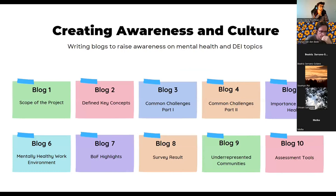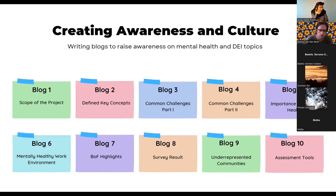One of the ways we try to create awareness is through writing blogs. So far, we've written eight published blogs and two are soon to be published. The first one focused on the scope of the project, introducing it to the community. The second blog focused on defining key concepts — well-being, mental health and DEI. The third and fourth blog focused on common challenges faced in open source. The fifth blog focused on why mental health is important, including indicators and risk factors. Blog six focused on creating mentally healthy work environments in open source. Blog seven covered highlights from a BoF session we conducted.